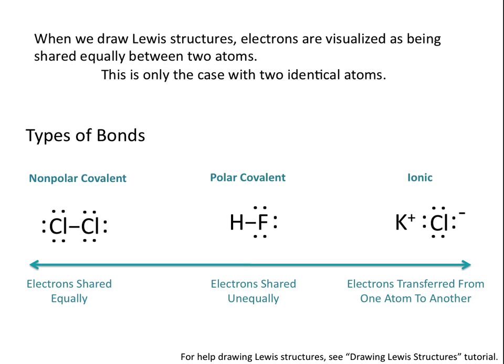For example, in the molecule Cl2, the bond between the two chlorine atoms is a non-polar covalent bond. Because both of the atoms are identical, each atom has the same electronegativity, or the same pull, on electrons shared in a bond.